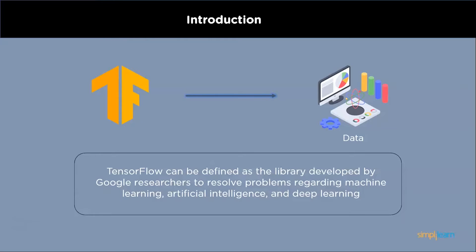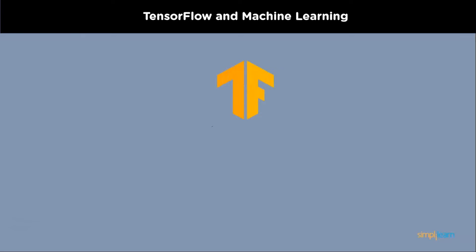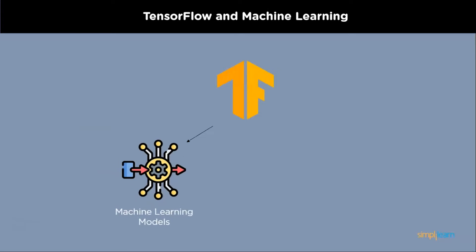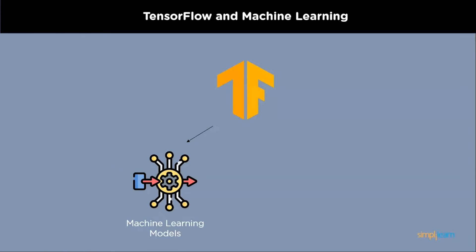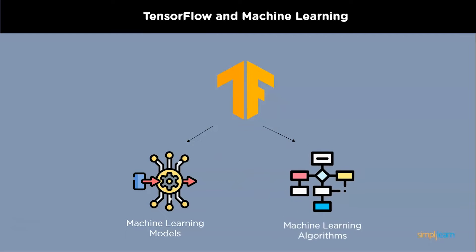Now we will understand the relationship between TensorFlow and machine learning. TensorFlow is used to develop machine learning models, particularly the TensorFlow API used for this purpose. Machine learning researchers use TensorFlow to create machine learning algorithms.